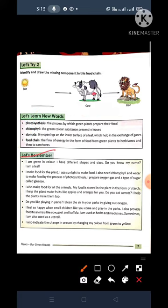Now come to the, let's remember. Some points again we are going to remember. Number 1. I am green in color. I have different shapes and size. Do you know my name? What is this? This is a leaf. Leaf is in green color. It has a different shape and sizes.